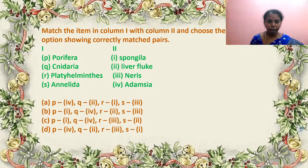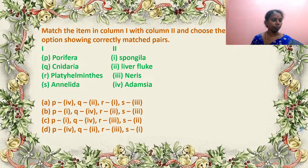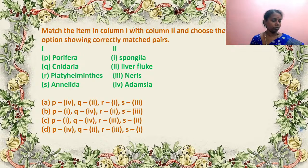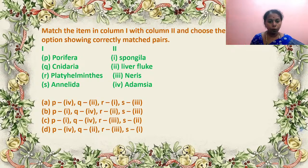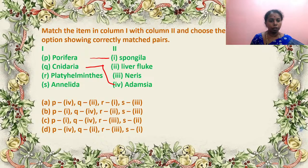Match column 1 and column 2 and choose the correctly matched pair: Porifera — Spongilla; Cnidaria — Adamsia; Platyhelminthes — liver fluke; Annelida — Nereis. Answer is B — Porifera is Spongilla, Cnidaria is Adamsia, Platyhelminthes is liver fluke, Annelida is Nereis. Excellent answer children.